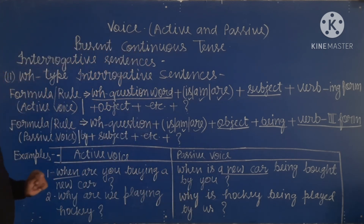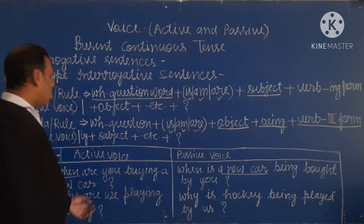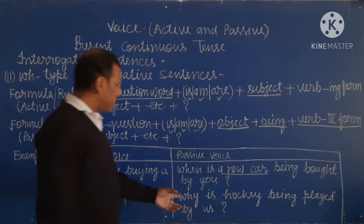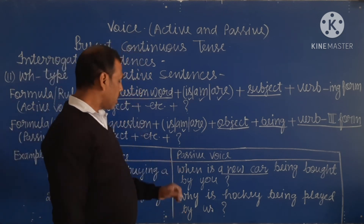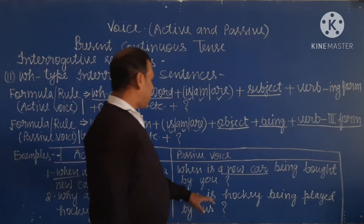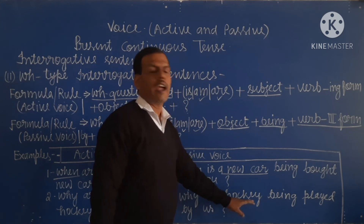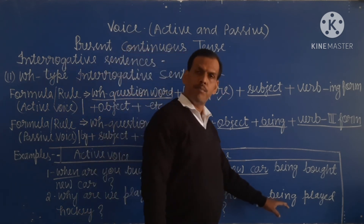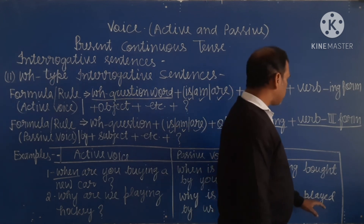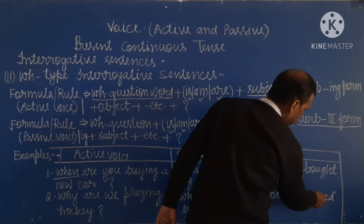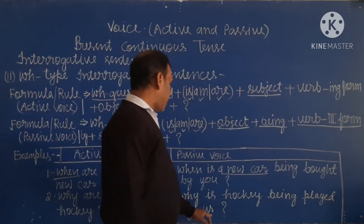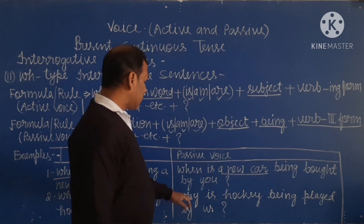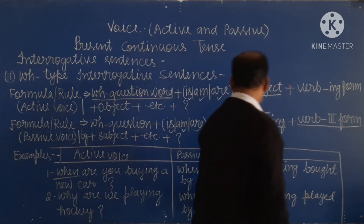The second WH example is: 'Why are we playing hockey?' — meaning 'hum log hockey kyun khel rahe hain?' In passive voice, 'hockey' is the object, so we write 'is'. Then 'being', then the third form of 'play' which is 'played', then 'by us' — 'us' being the objective case of 'we'. So the passive voice sentence is: 'Why is hockey being played by us?'